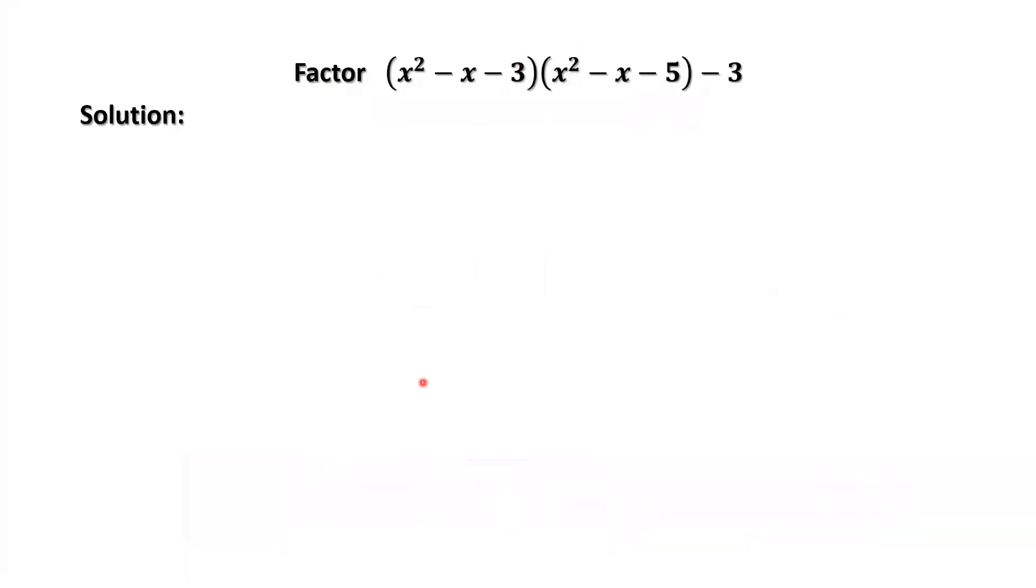We are going to introduce a general idea to solve this kind of question. In general, we define a new variable which is between these two numbers. How to find this new variable? Just consider the average of these two numbers.